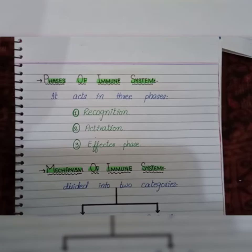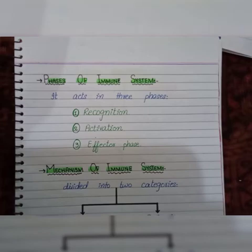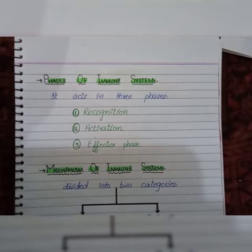First, recognition — this is accomplished with the help of B lymphocyte receptors and T lymphocyte receptors. Second, activation — in this phase, metabolic processes are activated inside the cells. Third and last, we have the effector phase, which follows the phase of activation.